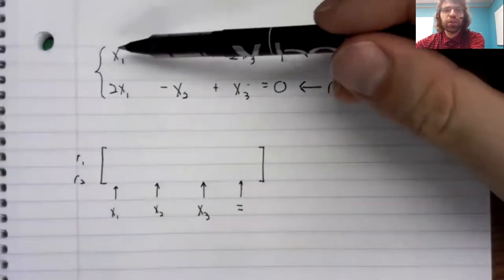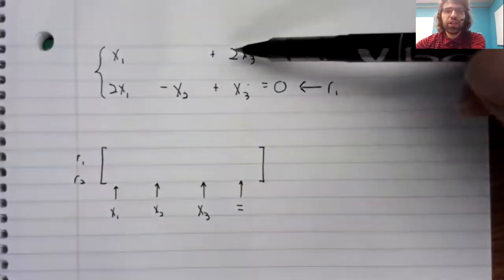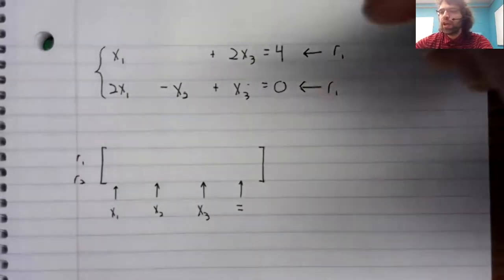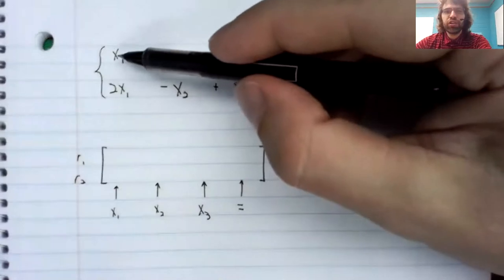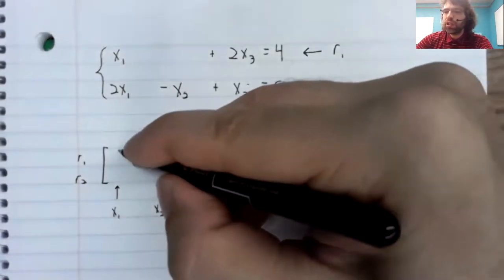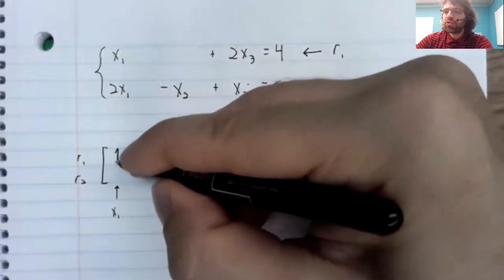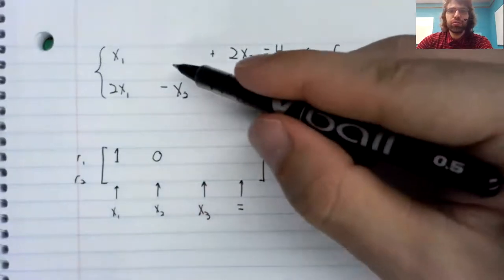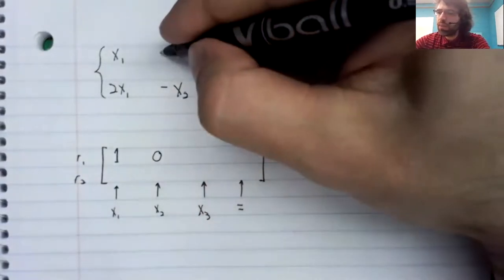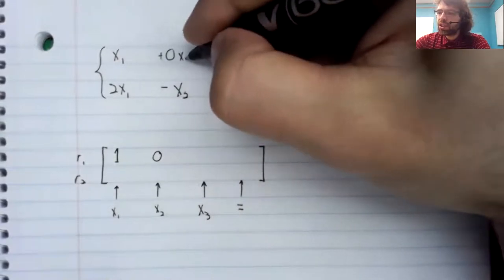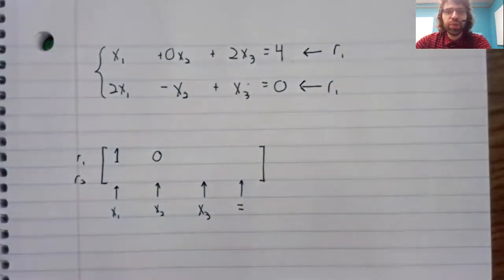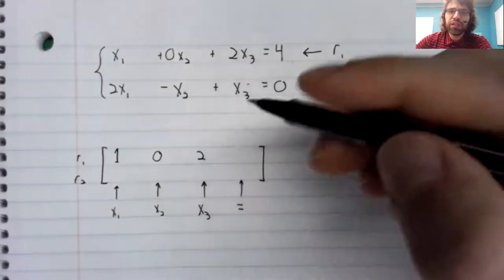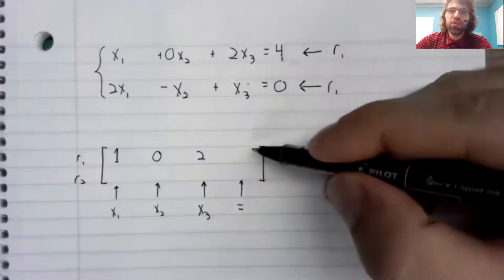So we look at this equation. The first equation corresponds to the first row, and we look at the coefficients that appear. One x1, zero x2. There's nothing here, but we could write in a zero x2 if we wanted. Two x3 equals four.